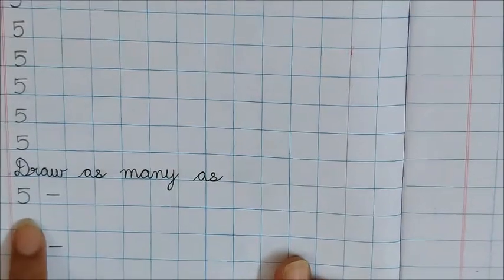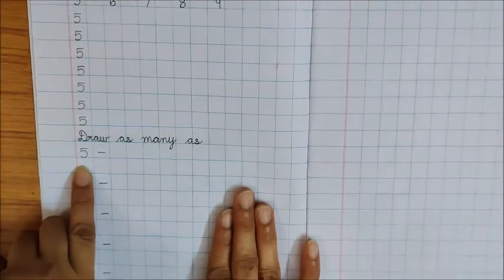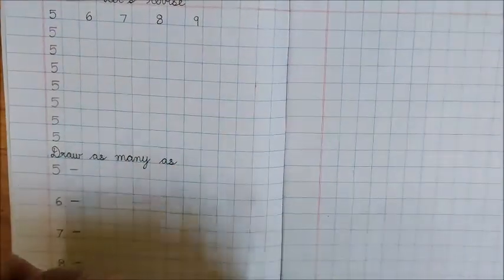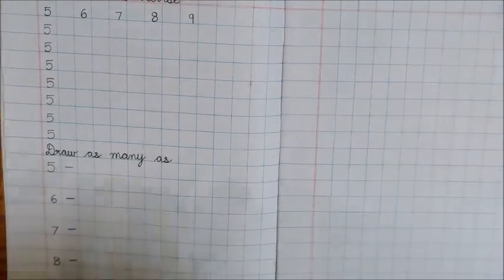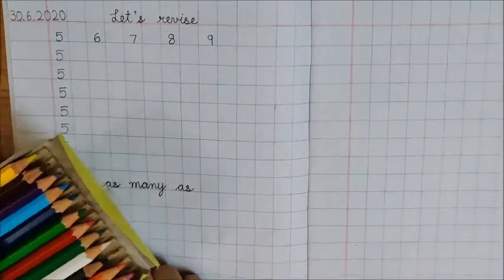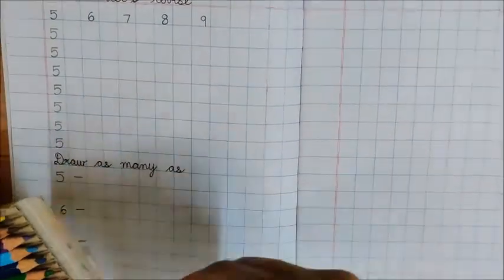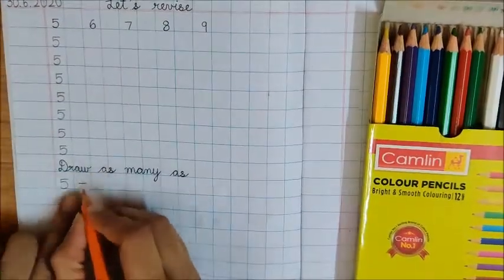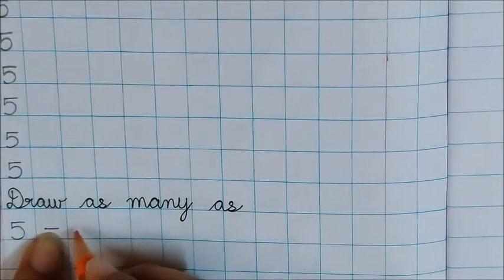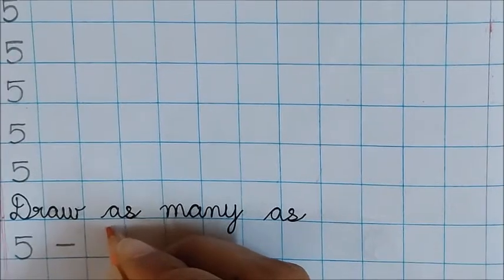Now it is time to draw as many as. Look at the first number. What is the first number? 5. So for number 5 you will draw 5 objects. So take your color pencils. Don't draw with writing pencils. You have to be ready with your color pencils.